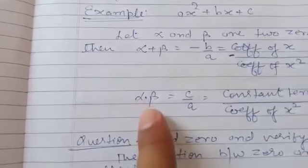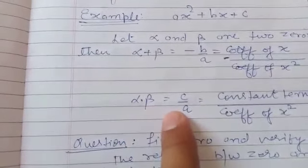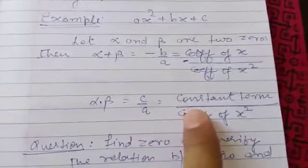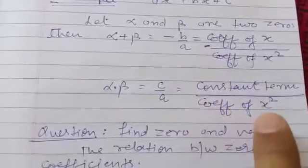Similarly, product of the zeros, alpha into beta equals c/a, or we can say constant term upon coefficient of x².